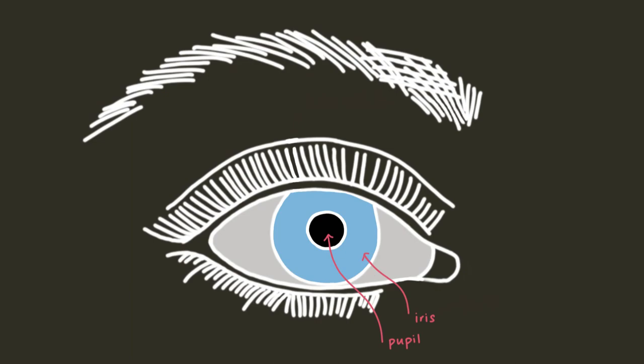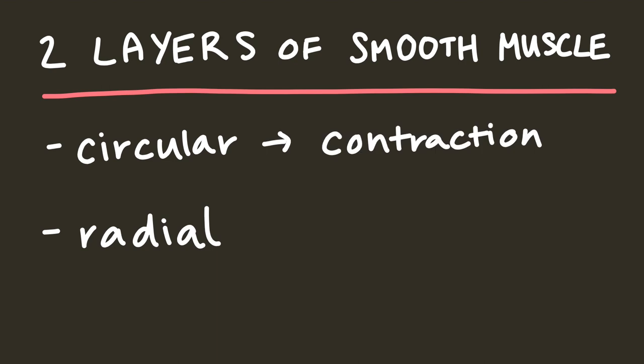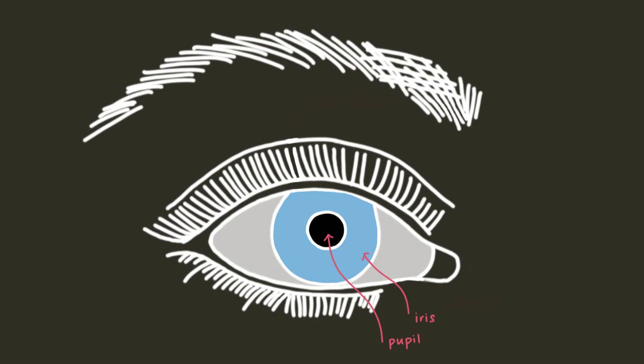Behind the cornea lies the iris and the pupil. The iris is the colored part of the eye and it has two layers of smooth muscle, the circular and radial muscles. The circular muscles are in charge of contracting the pupil, which is the opening in the eye through which light enters. The radial muscles are in charge of dilating the pupil. Pupil contraction and dilation occur due to many things, including changes in lighting conditions and mental state.